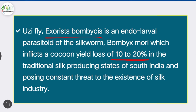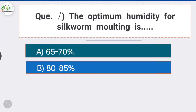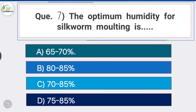Question number seven: the optimum humidity for silkworm moulting is — option A is the correct answer — 65 to 70 percent. The optimum humidity for silkworm moulting is 65 to 70 percent.